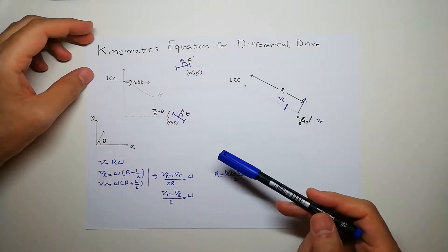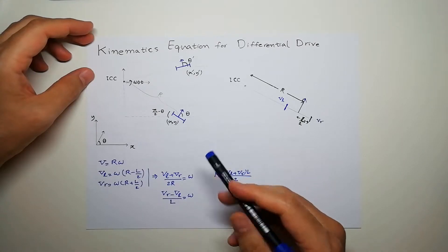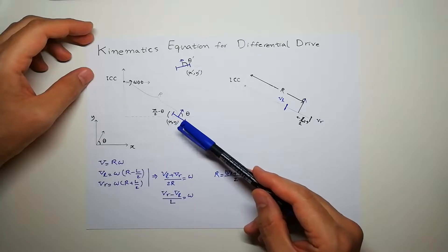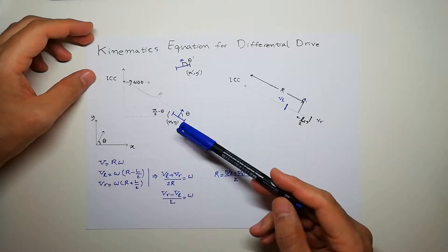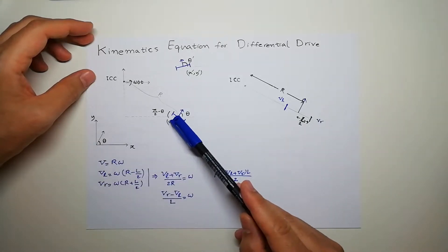So let's see the equation. Suppose this is your robot, it is here in the pose X and Y. This is the heading of the robot, this is the frame which is attached to the robot, and this is your world coordinate system. So the pose of the robot is X, Y with the heading theta.